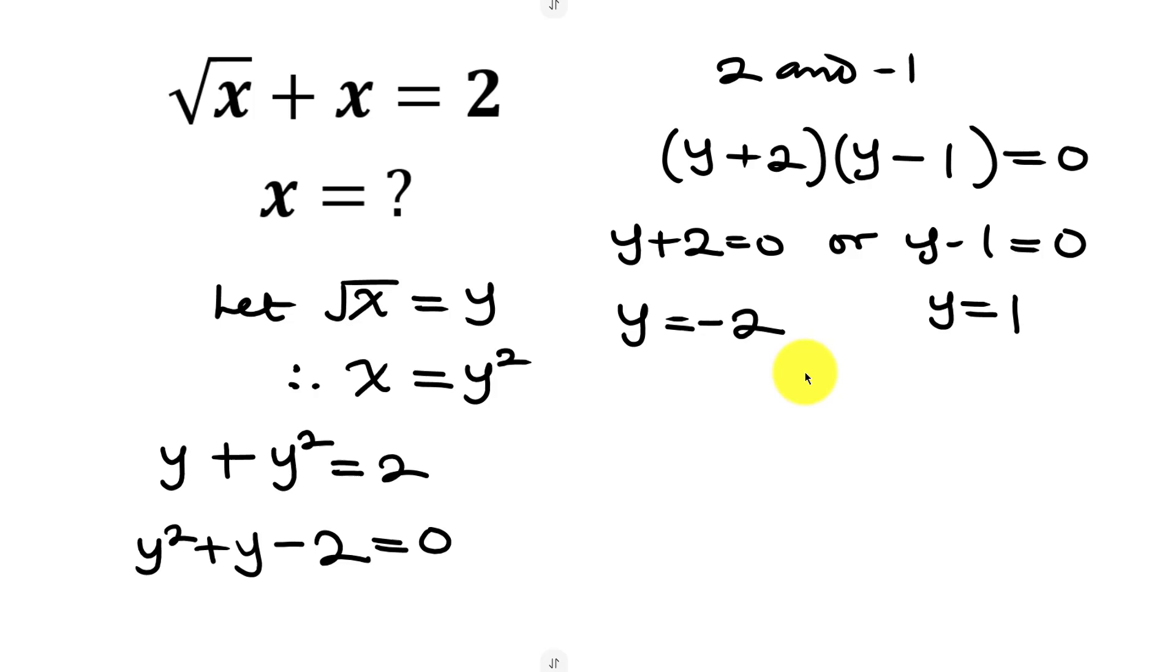We said √x = y, and the square root of x is always positive. This means y must also be positive. So we reject y = -2, and the value of y is 1.